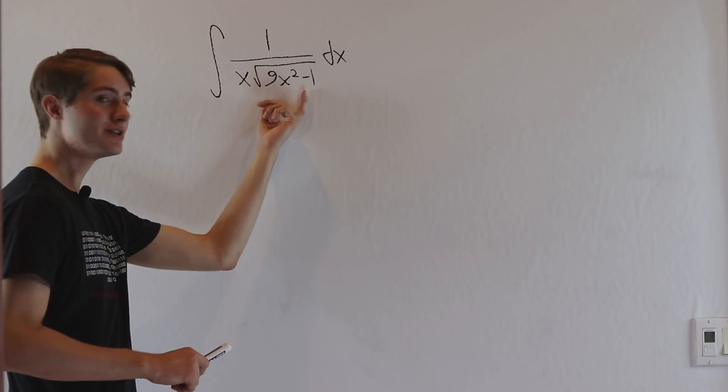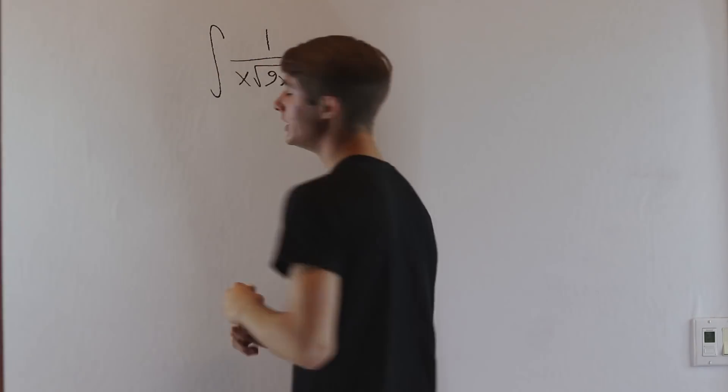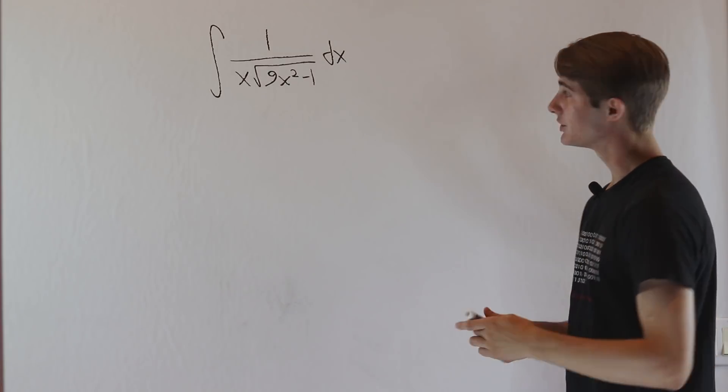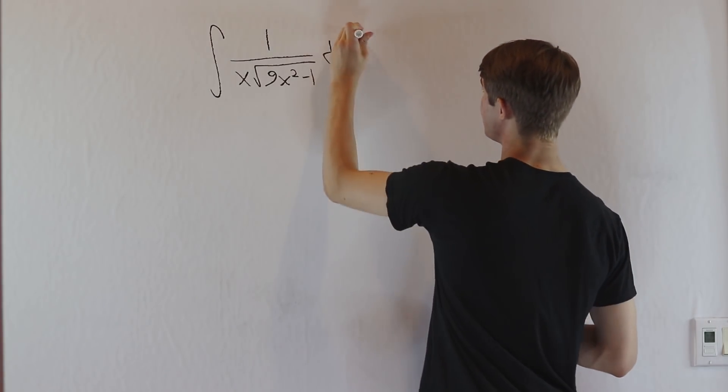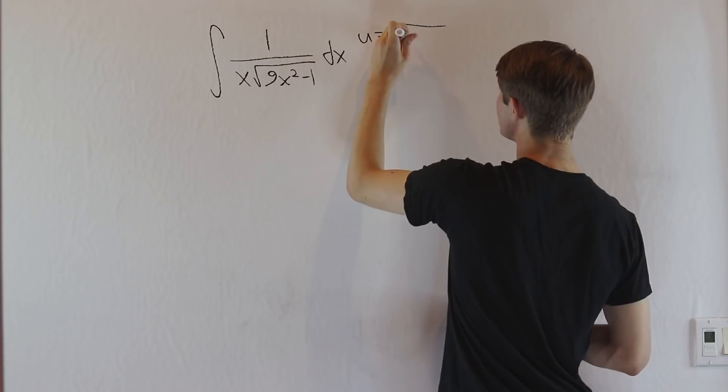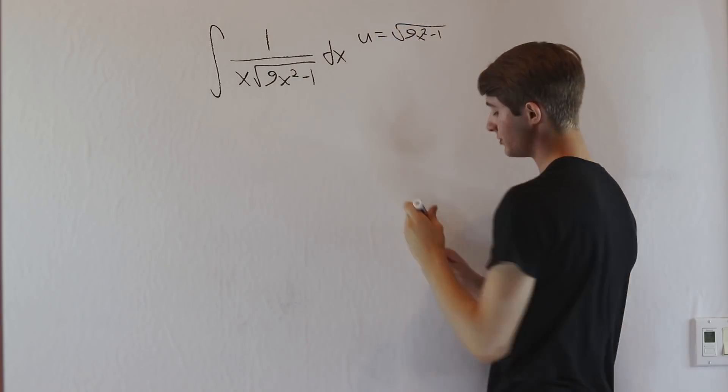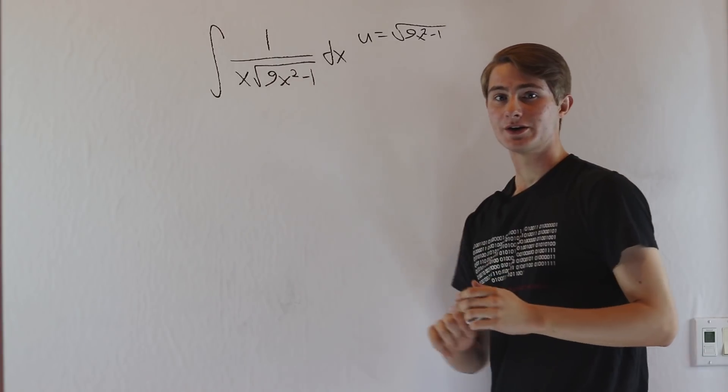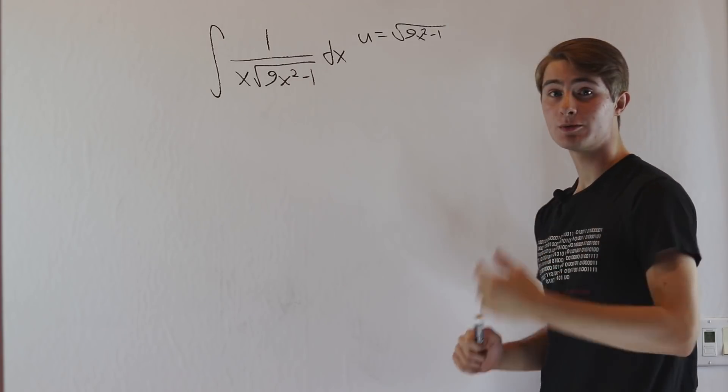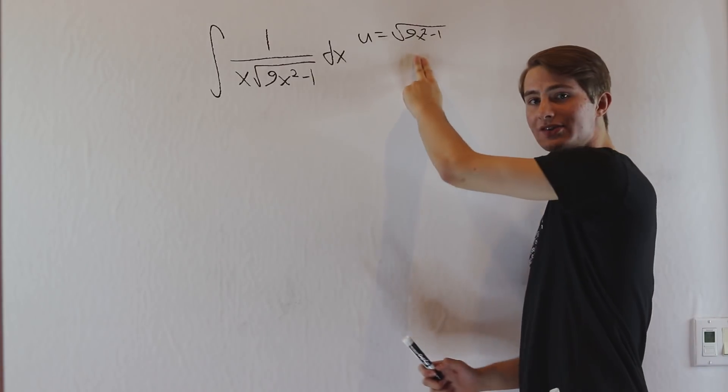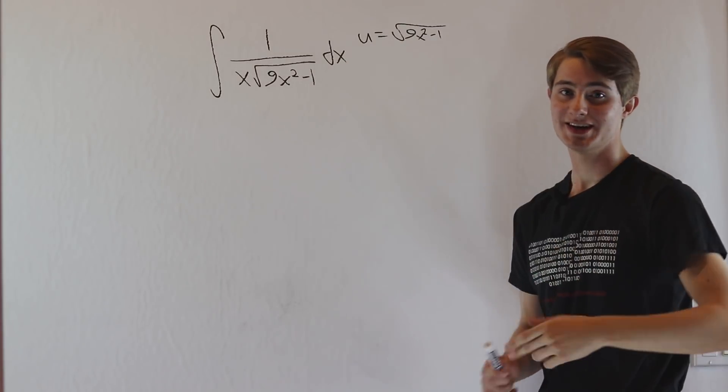So to start off with this integral, we see that there's a square root in the denominator. And generally when there's a square root, it's a good idea to try substituting it just to see what happens. So if we let u equal the square root of 9x squared minus 1, we don't see any type of du jumping out at us in this integral, so it's probably a good idea to try to isolate x in this square root and then try to find dx that way.